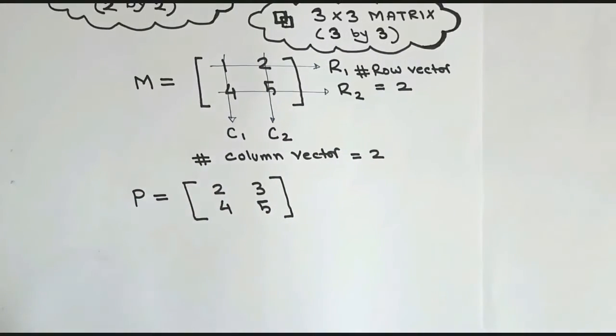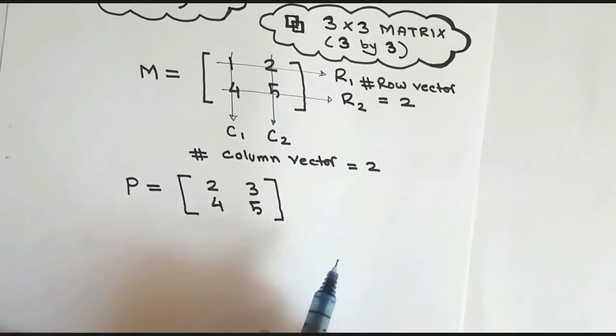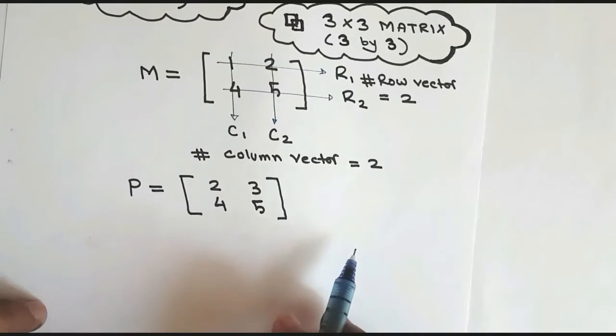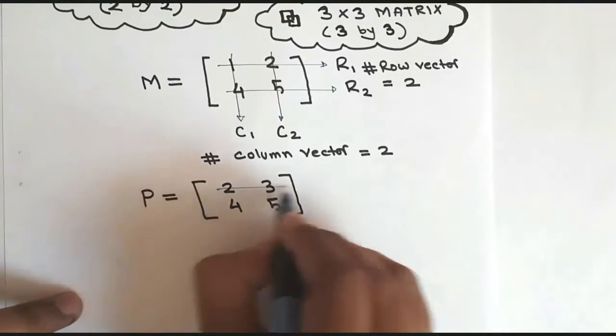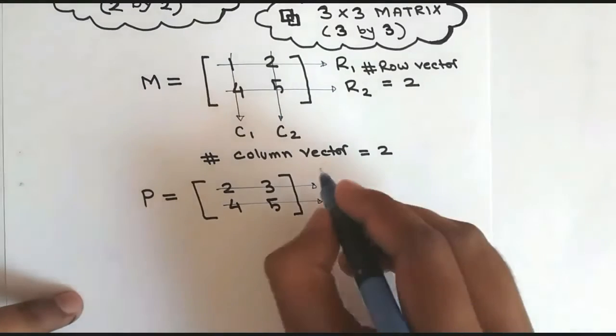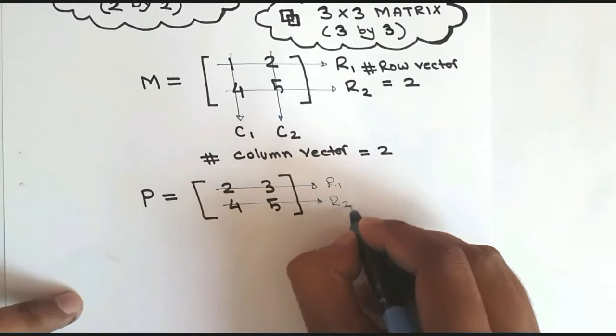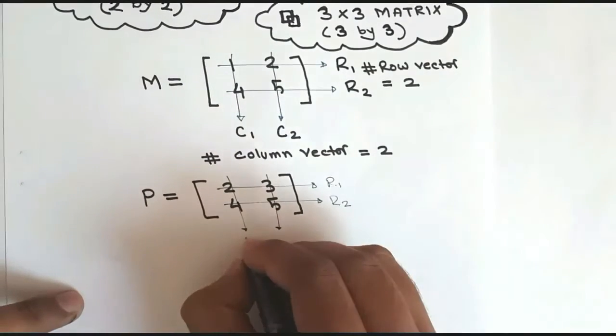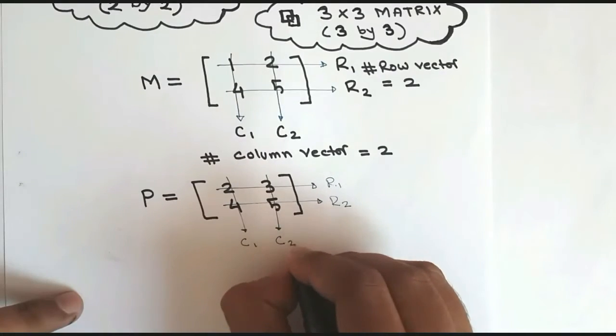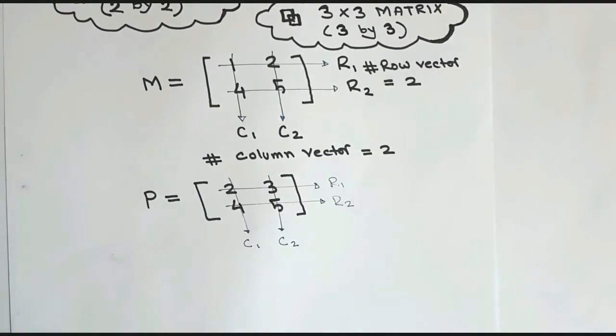So let me take P, and its elements are 2, 3, 4, and 5. Now I'll be showing you 2x2 matrix. Let me straighten the paper first, yes.